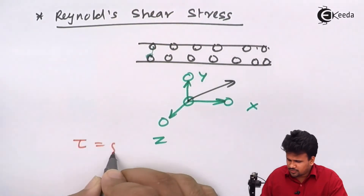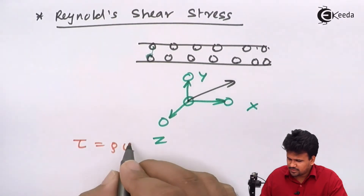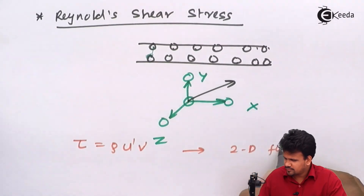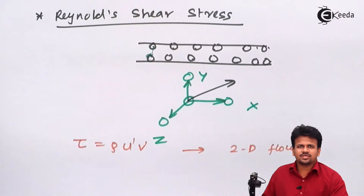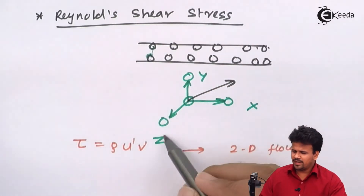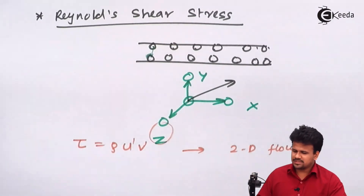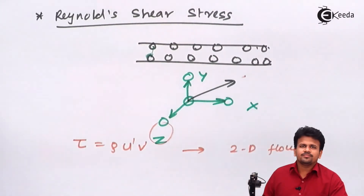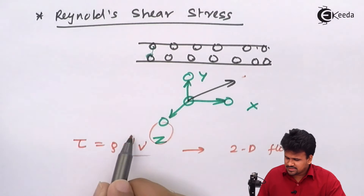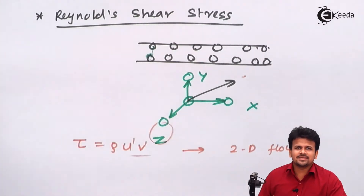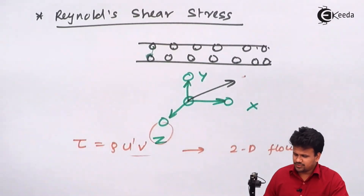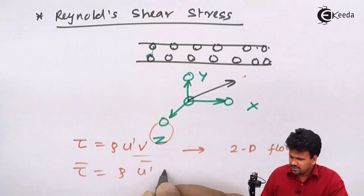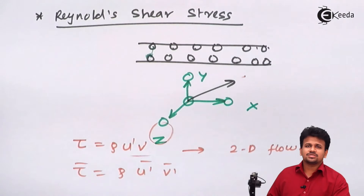Reynolds found that for a two-dimensional flow, where the z-component is not considered, the shear stress formula is τ = ρ × u-dash × v-dash. Since velocity fluctuates, we take the mean: τ = ρ × (u-dash × v-dash) bar. This is called the Reynolds shear stress. Based on Reynolds stress, Prandtl proposed the Prandtl mixing length theory.